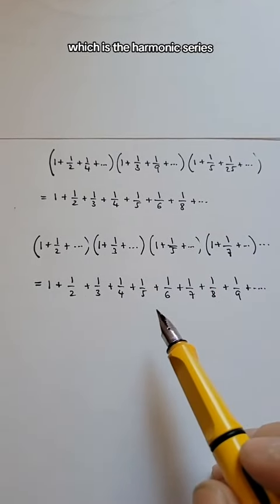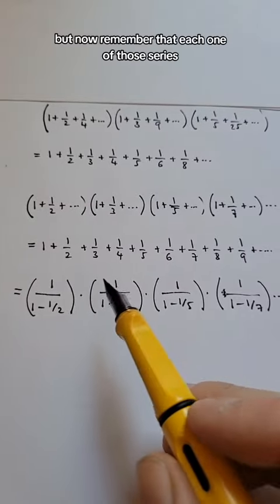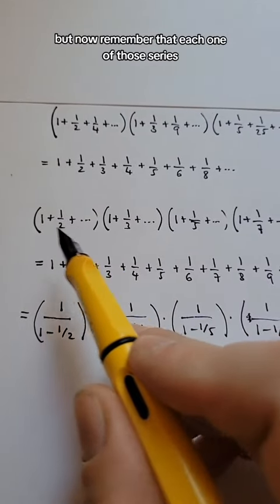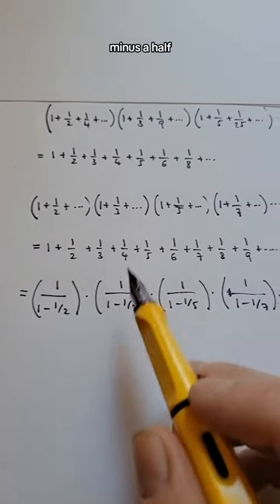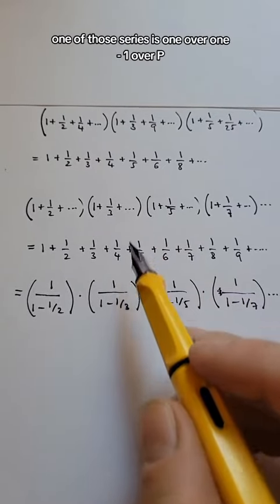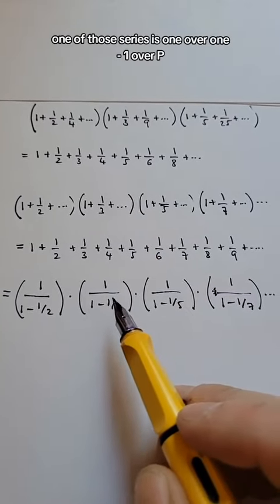But now remember that each one of those series is a geometric series, so I can add it up. So that is 1 over 1 minus 1/2, and for any prime, one of those series is 1 over 1 minus 1 over p.